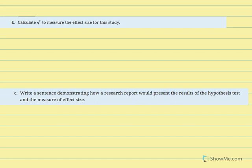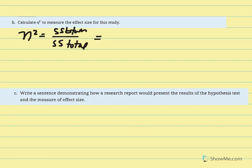Using this information we can calculate our effect size — the percentage of variability accounted for by the difference in this quasi-independent variable. The equation is SS between over SS total. SS between was 72 and SS total was 177, so 72 divided by 177 gives us approximately 0.407, meaning 40.7% of the difference in the means is attributed to the teacher type.